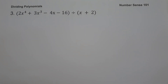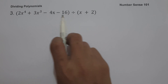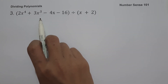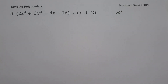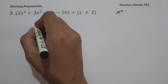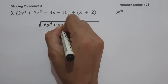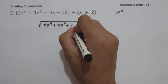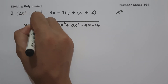For example number three, we have the quantity 2x raised to 4 plus 3x cubed minus 4x minus 16, divided by the quantity x plus 2. Since our divisor is a binomial, we are going to use long division. Our dividend is in descending power of the variable, but there is a missing term — x squared. So we fill in the blank with 0x squared, giving us 2x raised to 4 plus 3x cubed plus 0x squared minus 4x minus 16, divided by x plus 2.